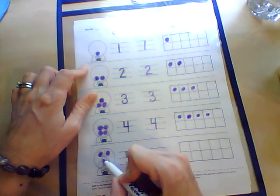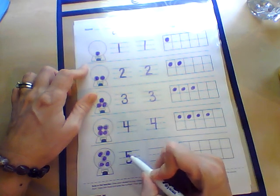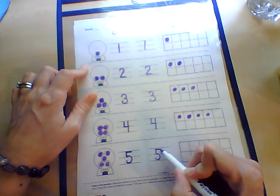We get to five. We'll fill in our gumballs. We go down, around, put a lid on it. Down, around, put a lid on it.